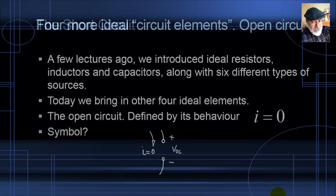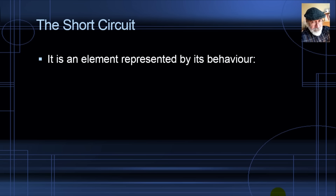Another element is the short circuit — an element represented by its behavior. Its voltage is always zero. The symbol is just a wire between the two nodes. The current through it is what we call the short circuit current, I_SC.